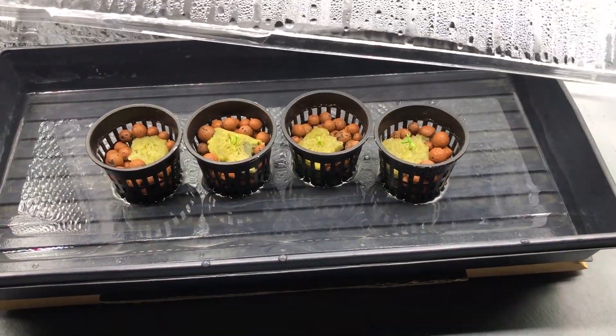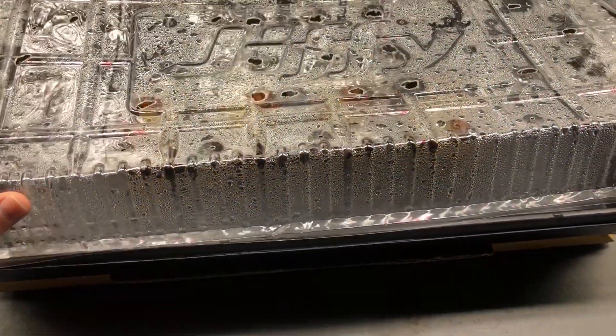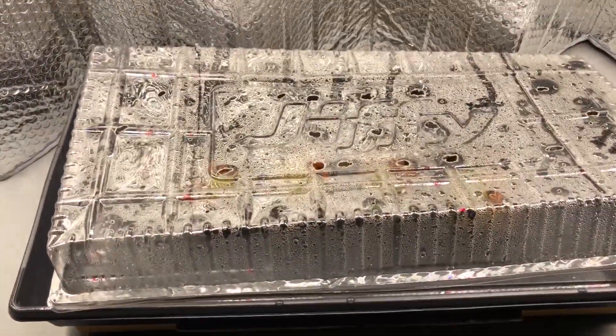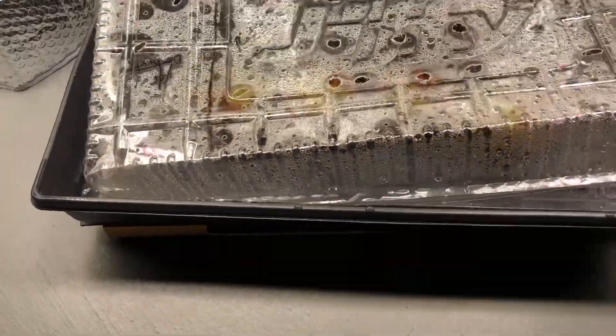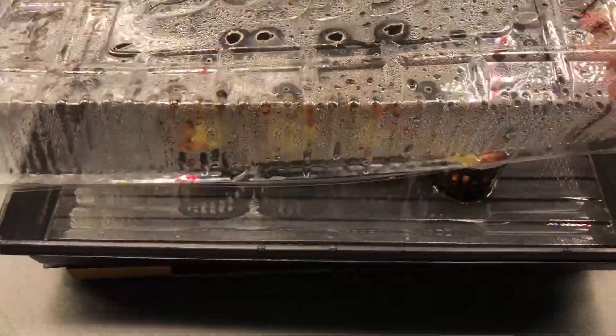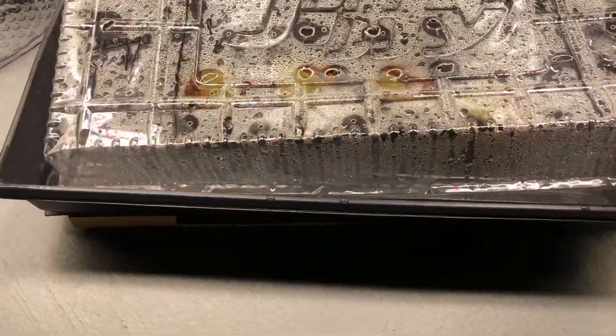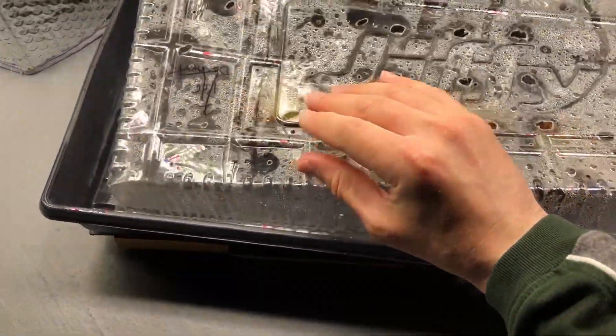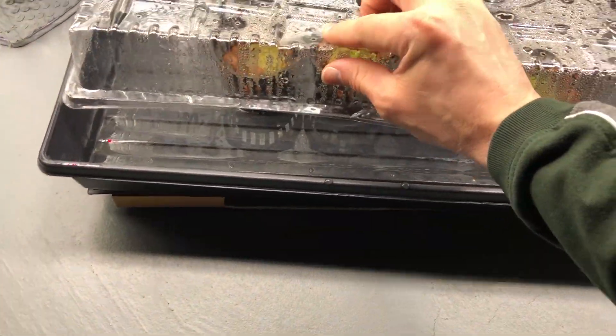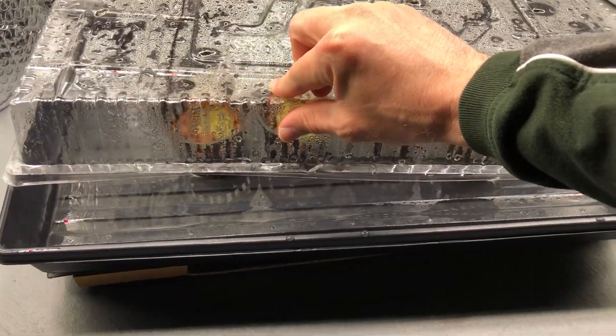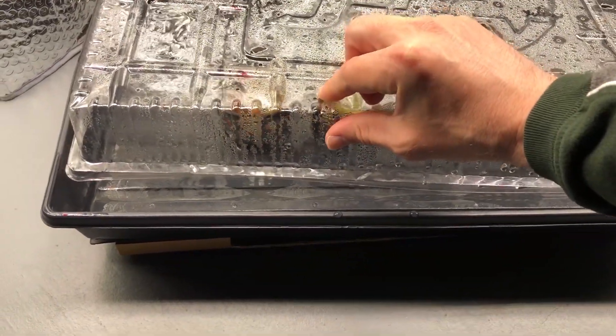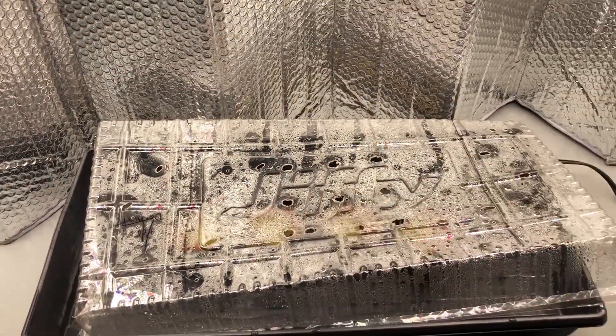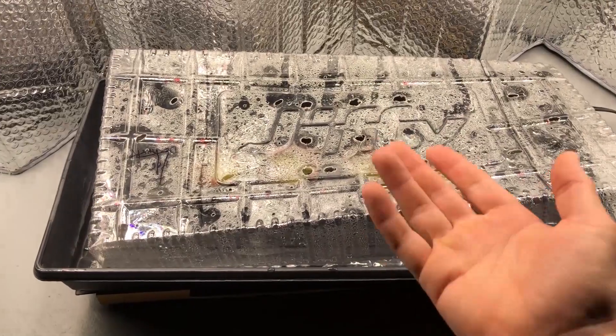For right now, the heat mat is unplugged and I'm still going to leave this cover on just a little bit longer. When the sprouts have already emerged, to keep humidity from being too high, I usually offset the cover a little bit like this. There's a gap here and there so they're getting more airflow, but it still maintains moisture so it doesn't all evaporate.